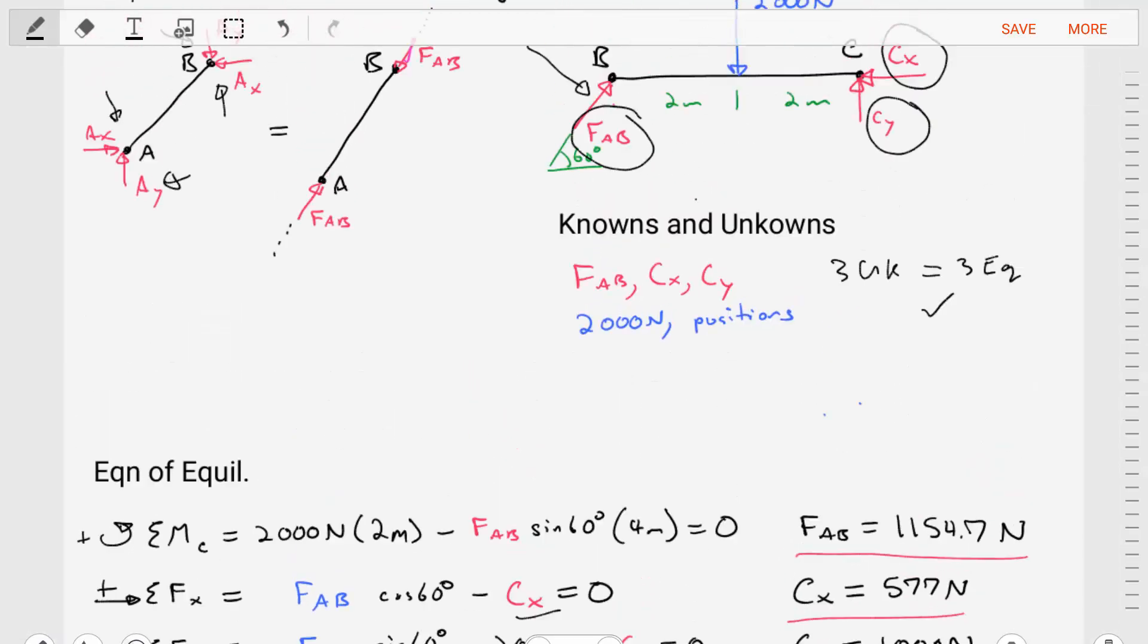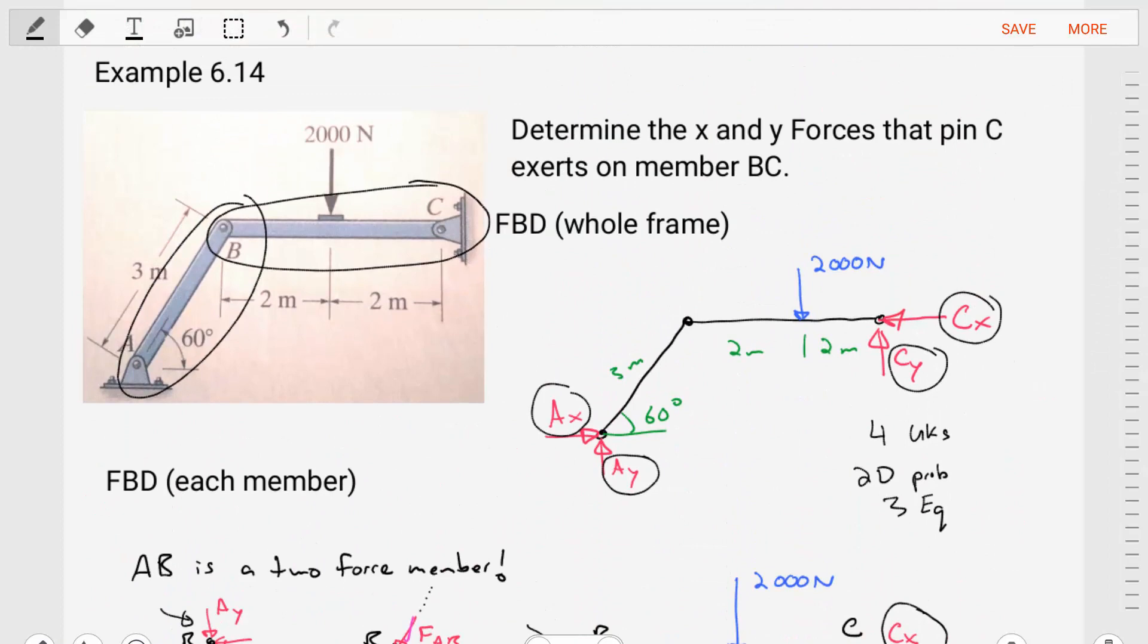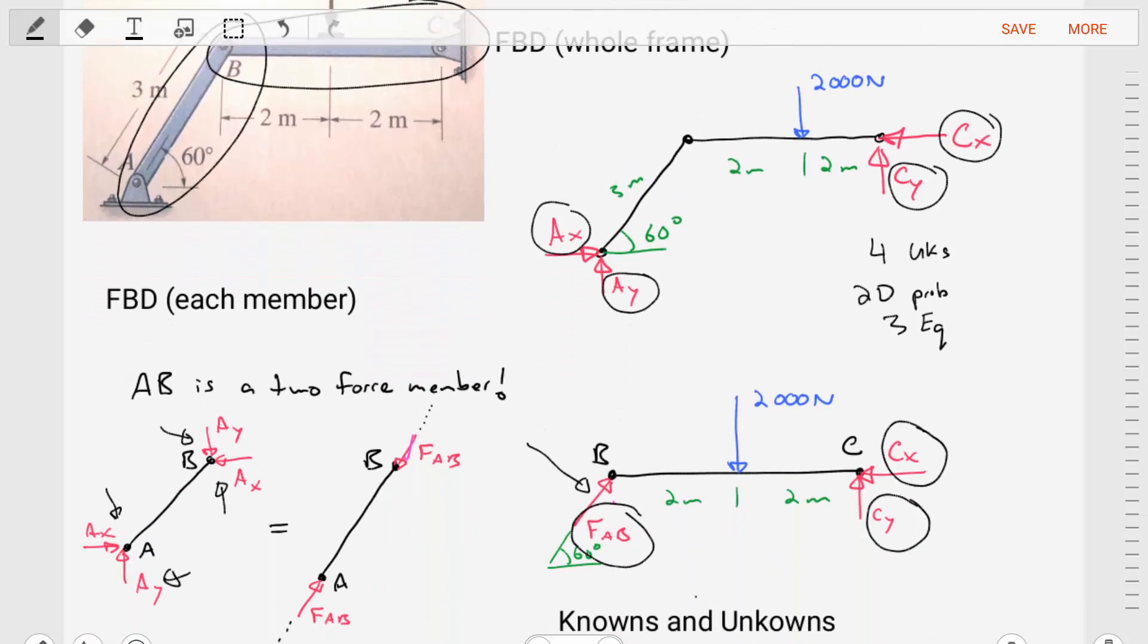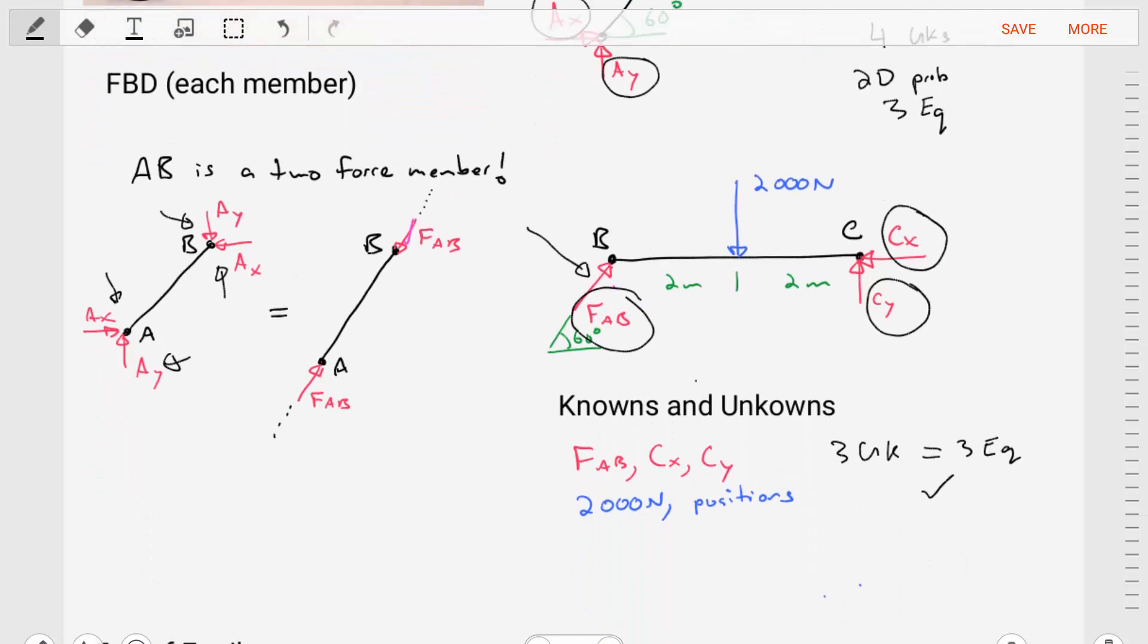by simply taking this frame and dissecting it, breaking it up into its sub-diagrams, we were able to realize that we had a two-force member and that we could simplify this problem into only three unknowns.